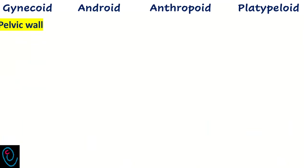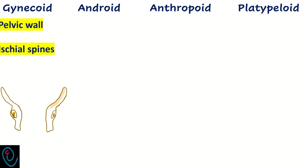In gynecoid pelvis, the pelvic walls are straight or slightly divergent, and the ischial spines are not prominent. This enables internal rotation to happen easily at the level of the ischial spines.